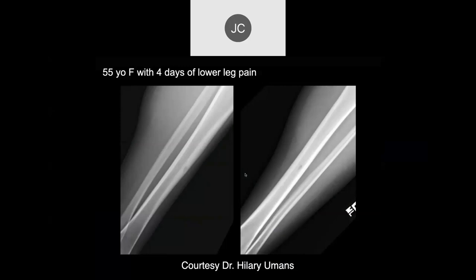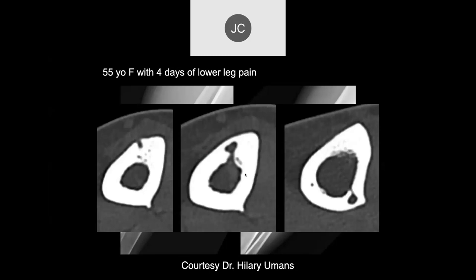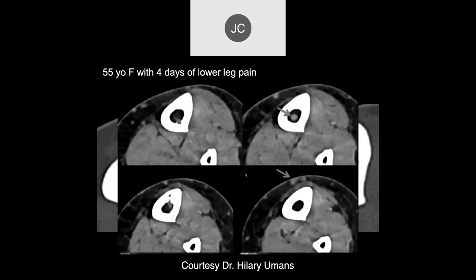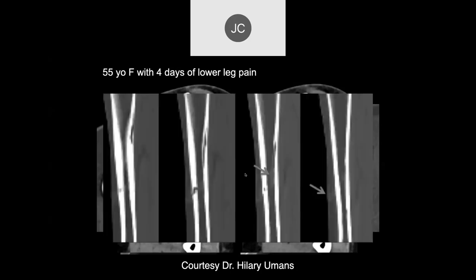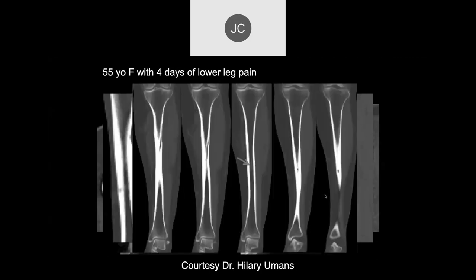What do you think of this case? A 55-year-old female with four days of lower leg pain. There's a little hole in the cortex — a lucency in the cortex. That's what the CT scan looks like. You can see a little bit of density in the soft tissues. This was just a little cortical abscess.